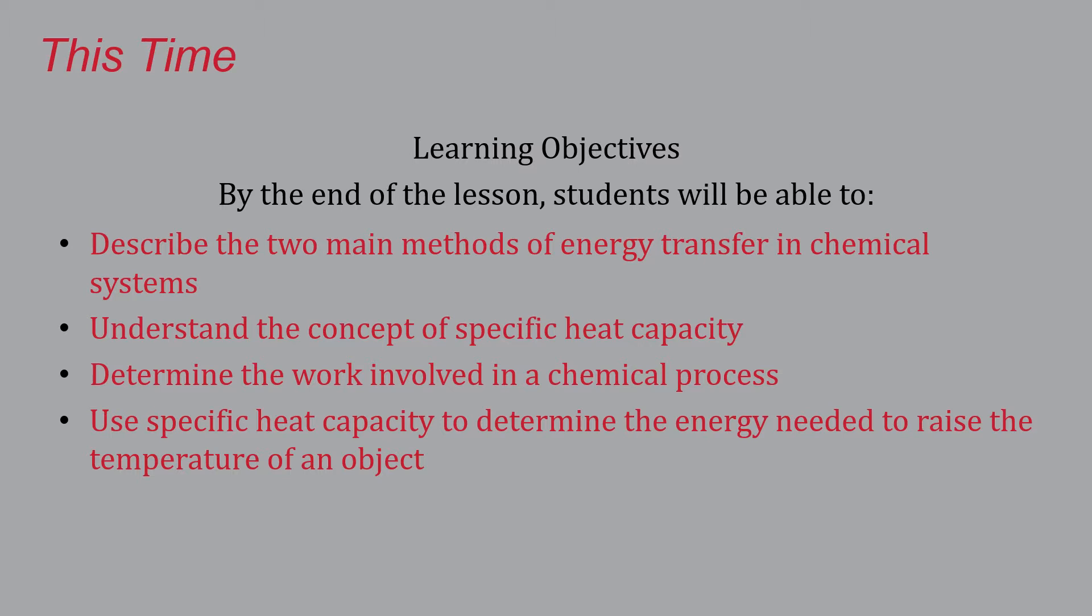So for this mini lesson, the second of three, we're going to talk about the two main forms of energy transfer in chemical systems. We're going to be introduced to the concept of specific heat capacity. You're going to be able to determine the work involved in a chemical process, at least in equation form, and using specific heat capacity, you're going to determine the energy needed to raise the temperature of an object.